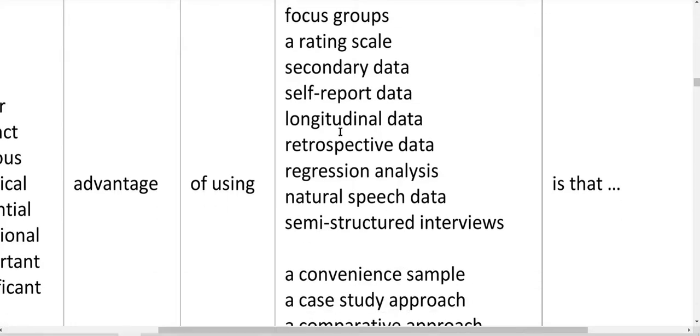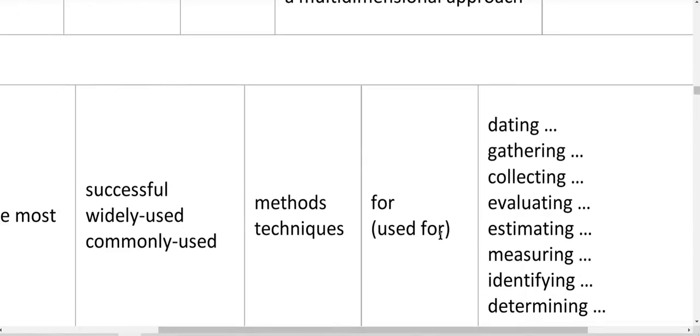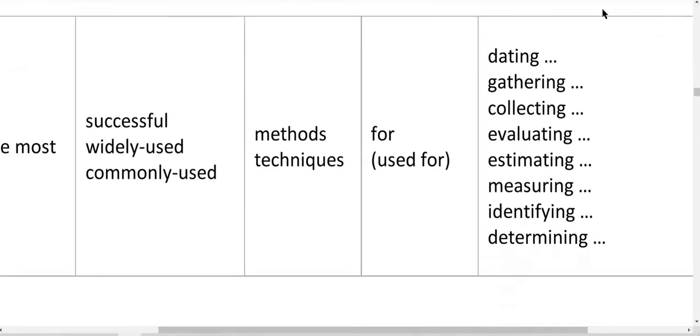You can use these words: longitudinal data, prospective data, regression analysis, self-reported data, a convenience sample, a case study approach, a comparative approach, a mixed method approach - that's qualitative and quantitative - a multidimensional approach. Dating, gathering, collecting, evaluating, estimating, measuring, identifying, determining.